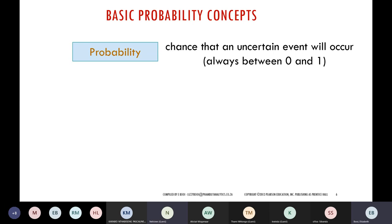So probabilities are between 0 and 1. They can never be more than 1 or less than 0. If you calculate a probability and get 2.3, you know something went wrong. Because probabilities are in decimal or relative frequency format, we can multiply by 100 to get a percentage. So 0 is 0% and 1 is 100%. Anything above 100% is not a probability.